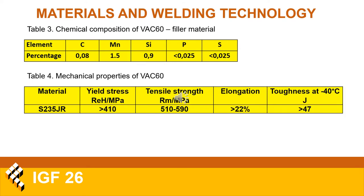Here you can see the chemical composition and mechanical properties of the filler material, the VAC60 wire, which was also used in the simulations. As can be clearly seen, there is considerable overmatching in the strength of the parent material and weld metal, which would later affect the behavior of the models.